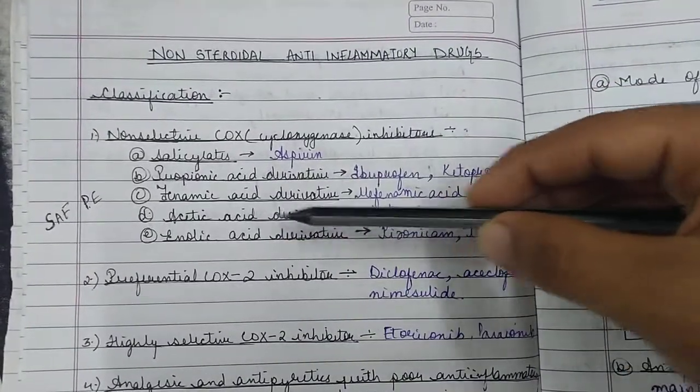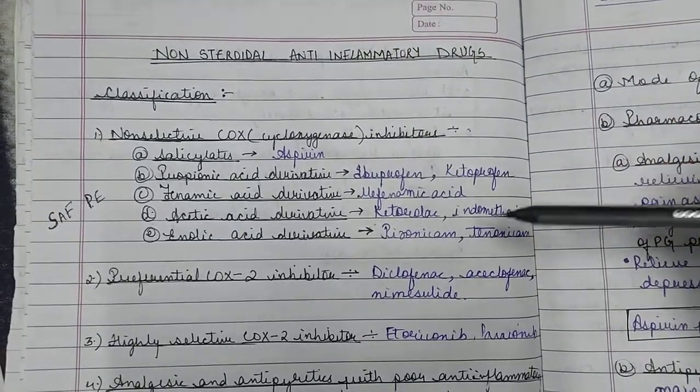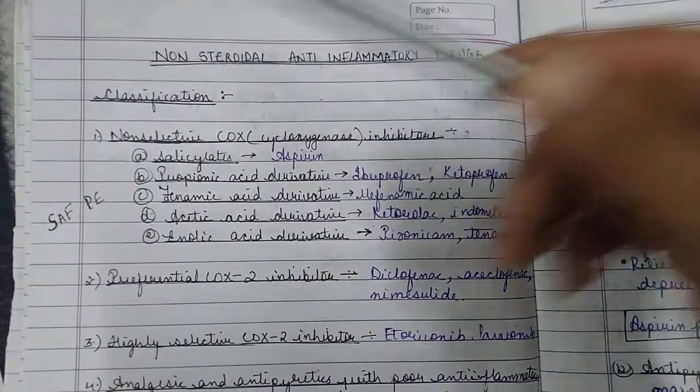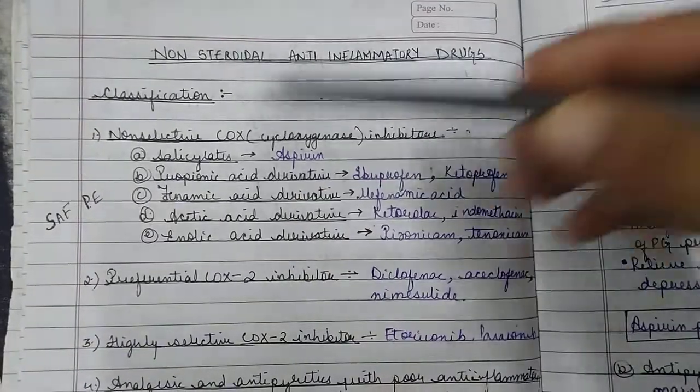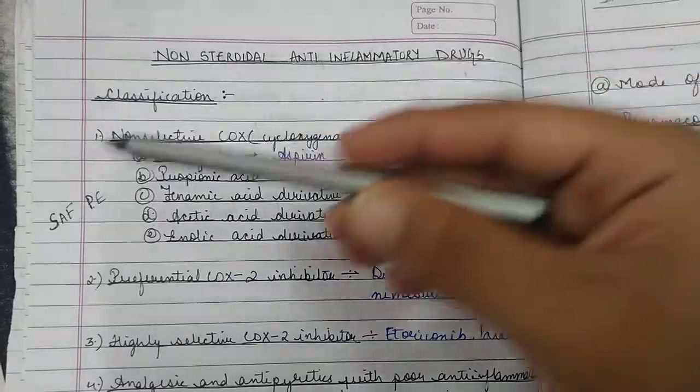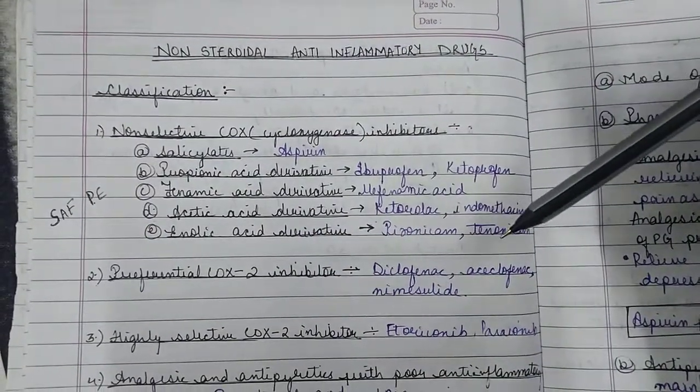A is acetic acid derivative, which includes ketorolac and indomethacin. F is phenamic acid, mefenamic acid. P is propionic acid derivative, that is ibuprofen and ketoprofen. And E is enolic acid derivative, piroxicam and tenoxicam.